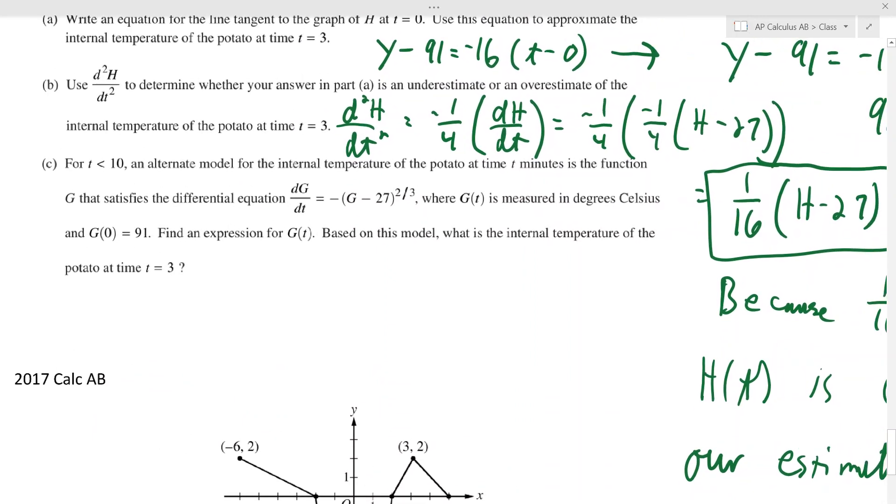And then C is asking, so now they're kind of switching up on us here, but they're saying, hey, if t is less than 10, which doesn't really matter too much for us right yet. Another model. So I know they say h of t tells you the temperature of this potato, but that's just a mathematical model. And there can be more than one model to represent something. Models aren't perfect. So sometimes you have more than one. Here, they're giving us another model called G, which they also tell us G of zero happens to be 91. Which makes sense because the potato's temperature at zero is 91.